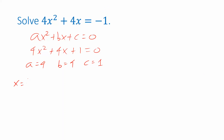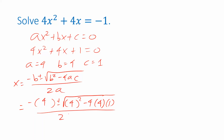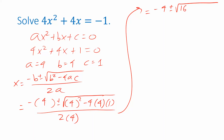Now with a equals 4, b equals 4, and c equals 1, let's plug into the quadratic formula: x equals negative b plus or minus the square root of b squared minus 4ac, all divided by 2a. It's a good idea to write that out every time. Replacing variables with their values: negative 4 plus or minus the square root of 4 squared, which is 16, minus 4 times 4 is 16, times 1 is 16, over 2 times 4 which is 8.